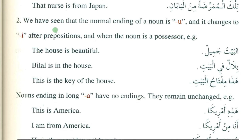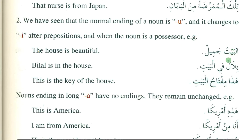Previously you have learnt that the normal ending of an ism is dhamma. This dhamma changes to kasra after harfujar. It also changes to kasra when the ism is mudaf ilayhi. So the normal ending is dhamma, and with harfujar or as mudaf ilayhi it becomes kasra.